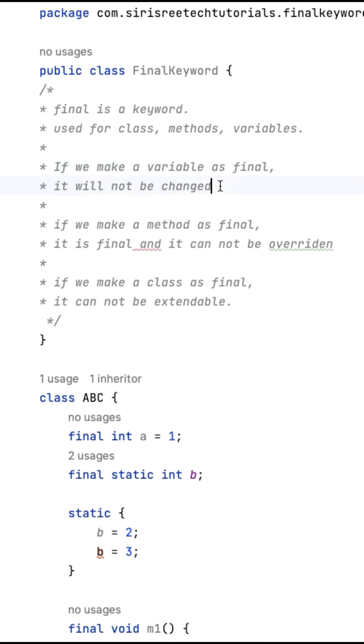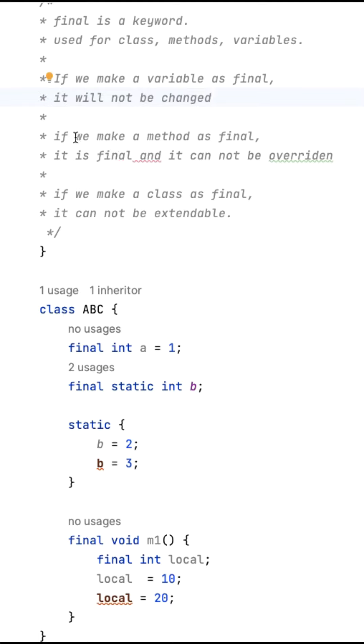If we make a variable as final, it can only be assigned once and cannot be changed. If we make a method as final, it cannot be overridden in inherited classes. If we make a class as final, it cannot be extendable, meaning child classes cannot be created.